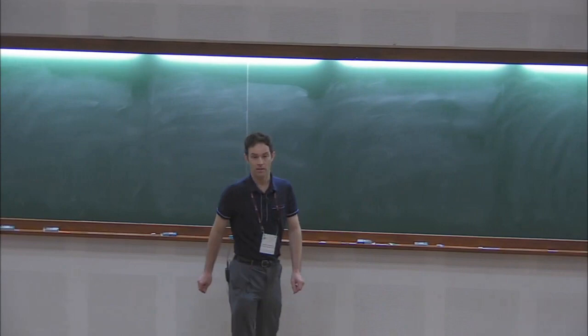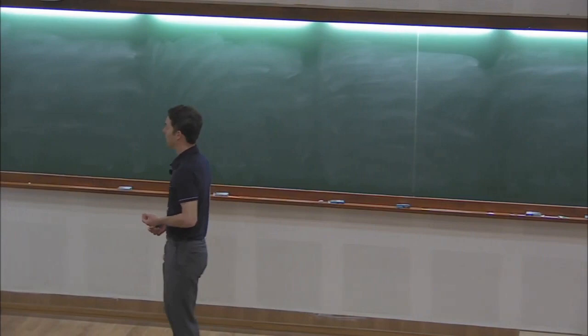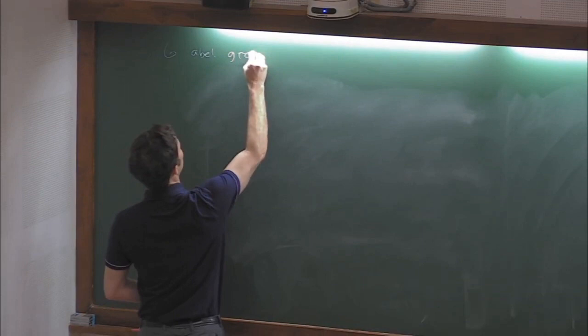This is the fourth lecture in my series. Today we're going to be moving on to higher dimensions. Let's actually define Freiman homomorphisms first. The idea is we have G an abelian group, and we have our sum set A plus B living inside G.